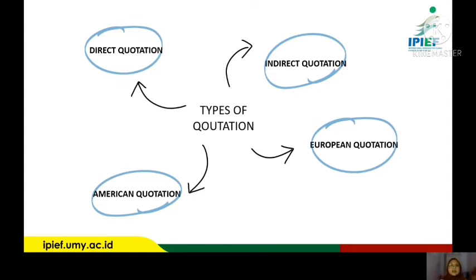The next topic is types of quotation. The quotation in foreign exchange rate has four types: the first is direct quotation, the second is indirect quotation, the third is European quotation, and the last is American quotation.